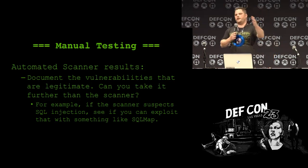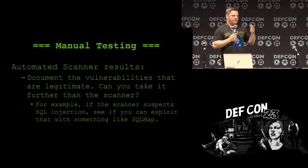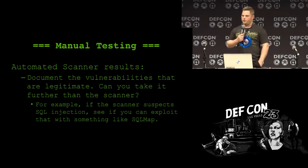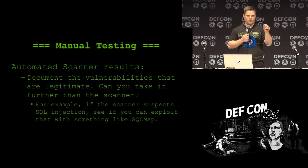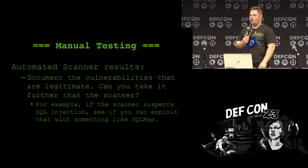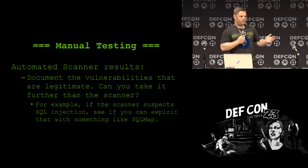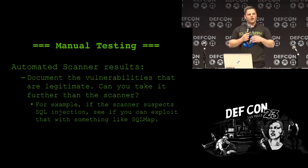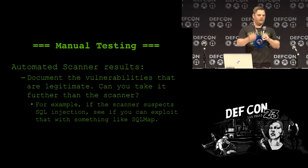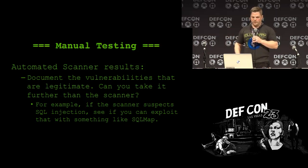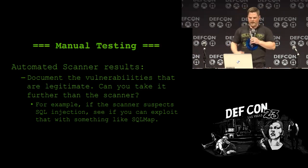Now let's talk about manual testing — this bleeds over into automated. Once your automated scans are finished and you have things to go after, instead of just verifying those findings, see if you can take them further. Don't just see potential cross-site scripting and do a pop-up alert box of one — that's pretty lame. If you really need to show an executive why this is important to justify budget to get it fixed, go deeper. Look at including keystroke logging or hooking the browser with BeEF. Take those results further than just the automated scanner — make it look real world. What would an attacker do? That's what you're trying to get across.